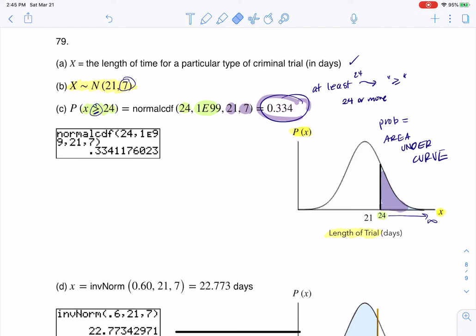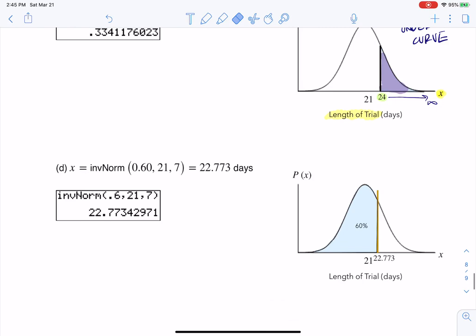So then part D says, find the probability. I'm reading the wrong one. Part D says 60% of all trials are completed within how many days? So here I actually gave you a percentage. I gave you a percentage.